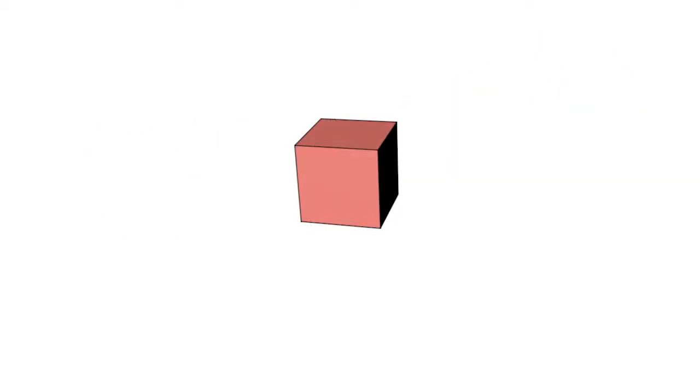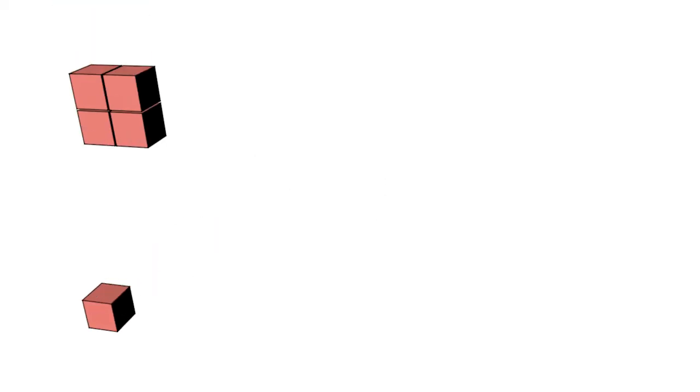We start with one red cube. This represents one squared, or one. Two squared would then look like this, two by two, or four.